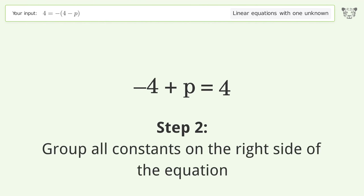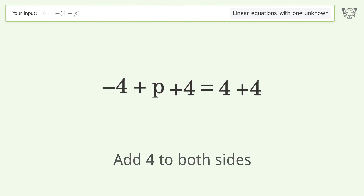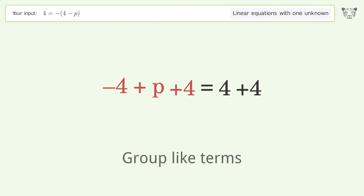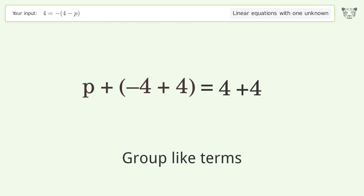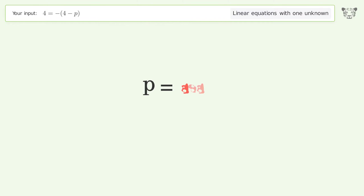Group all constants on the right side of the equation and add 4 to both sides. Group like terms, then simplify the arithmetic. The final result is p equals 8.